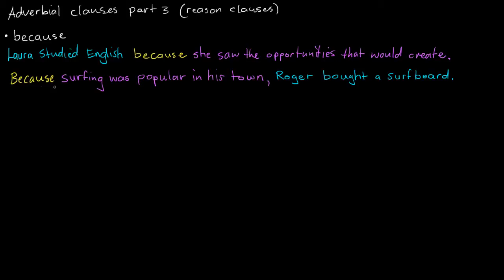If we look at another example here, we put the subordinating conjunction first, therefore the subordinate clause first. That's why we have a comma here followed by the main clause. Because surfing was popular in his town, Roger bought a surfboard. Why did he buy the surfboard? Because surfing was popular in his town - that's the reason why.